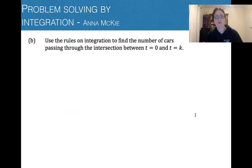Next part, two more parts. Use the rules of integration to find the number of cars passing through the intersection between t equals 0 and t equals k. So at any point in time that we're interested in. So we have to do this theoretically. The integral, the function was 500e to the 0.75t dt between 0 and k that we're interested in. So let's integrate that with respect to t.